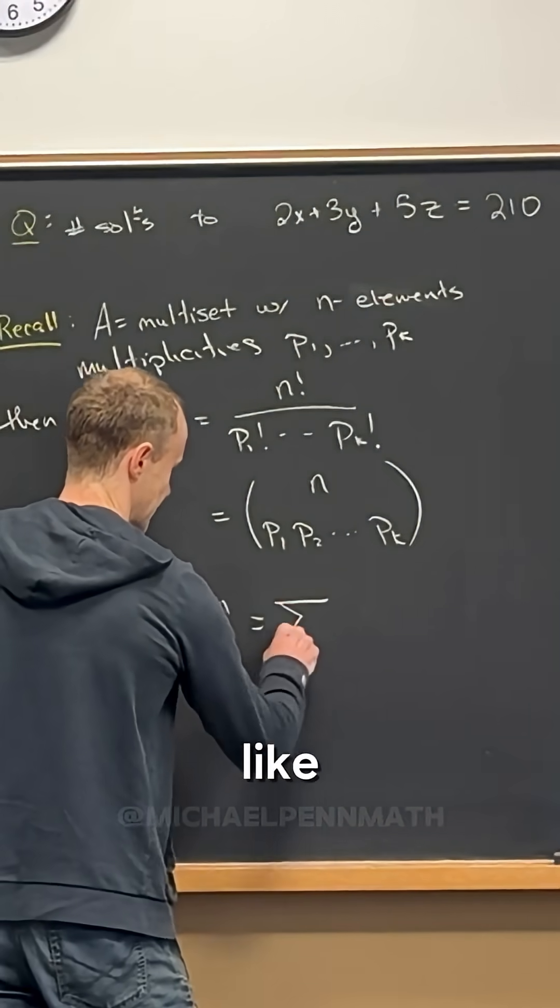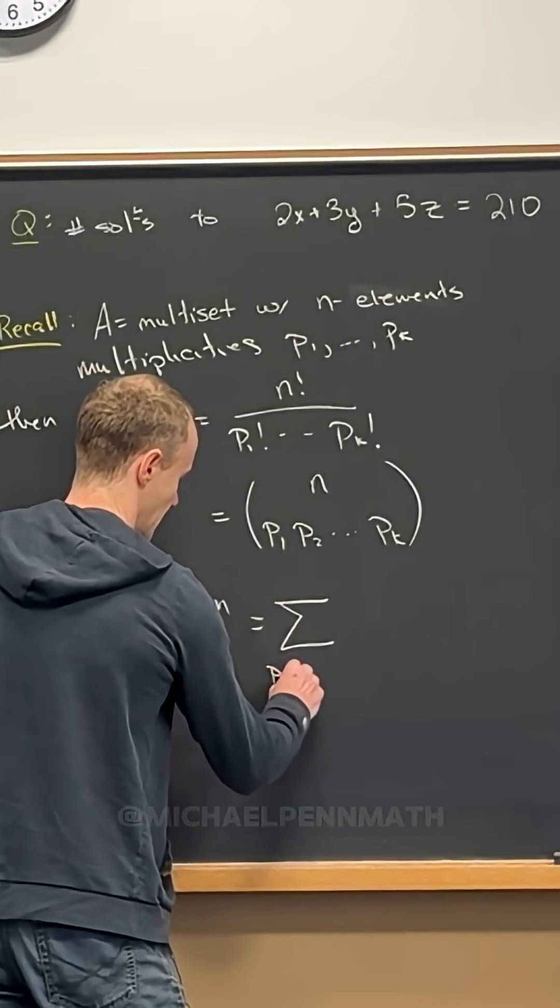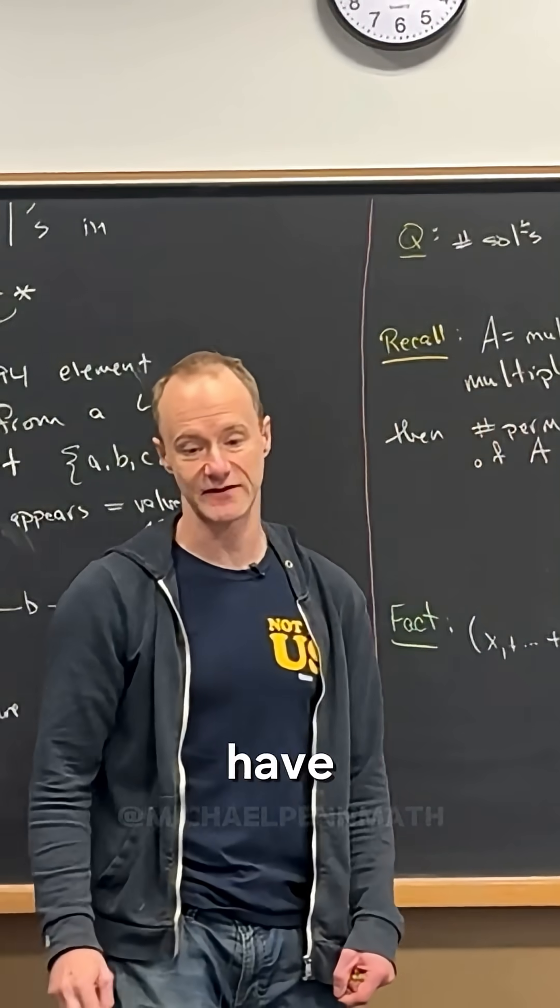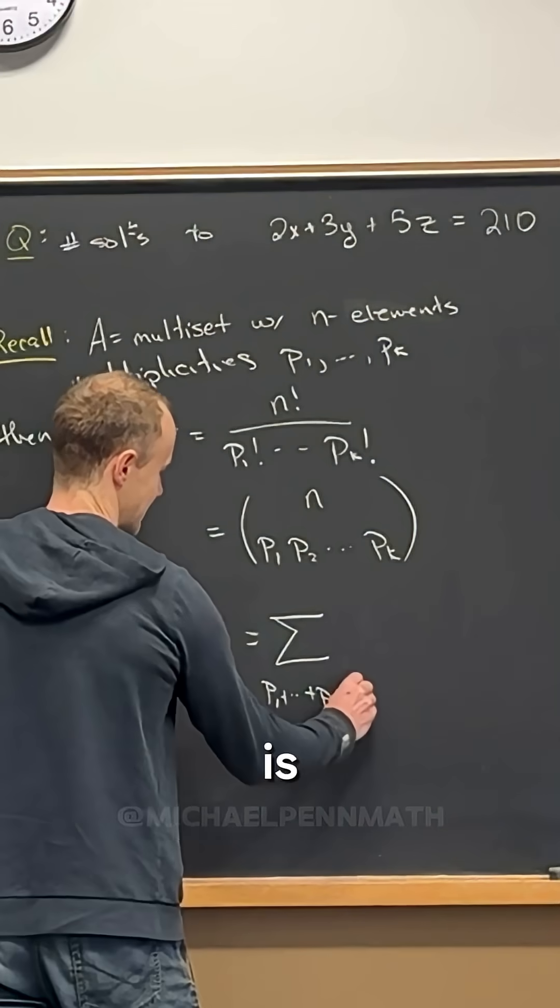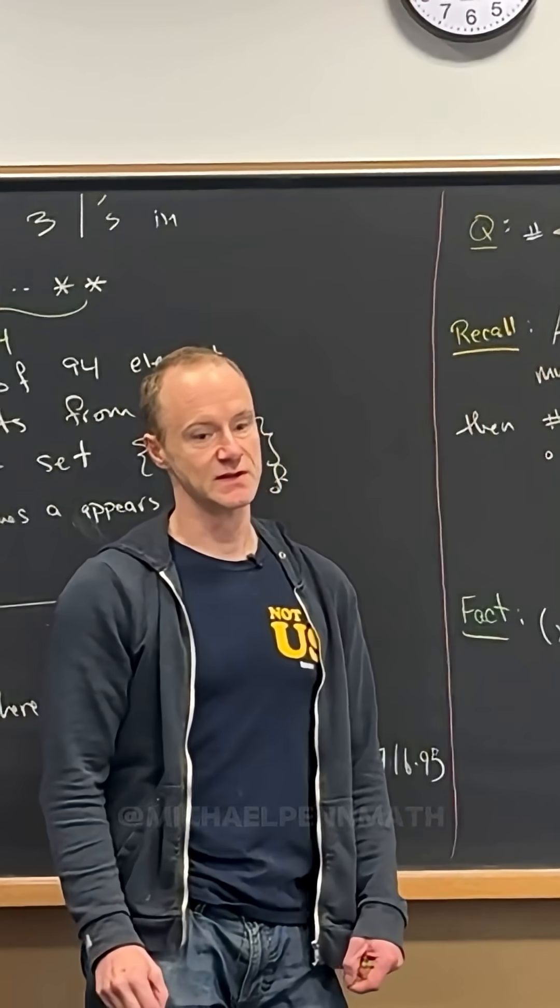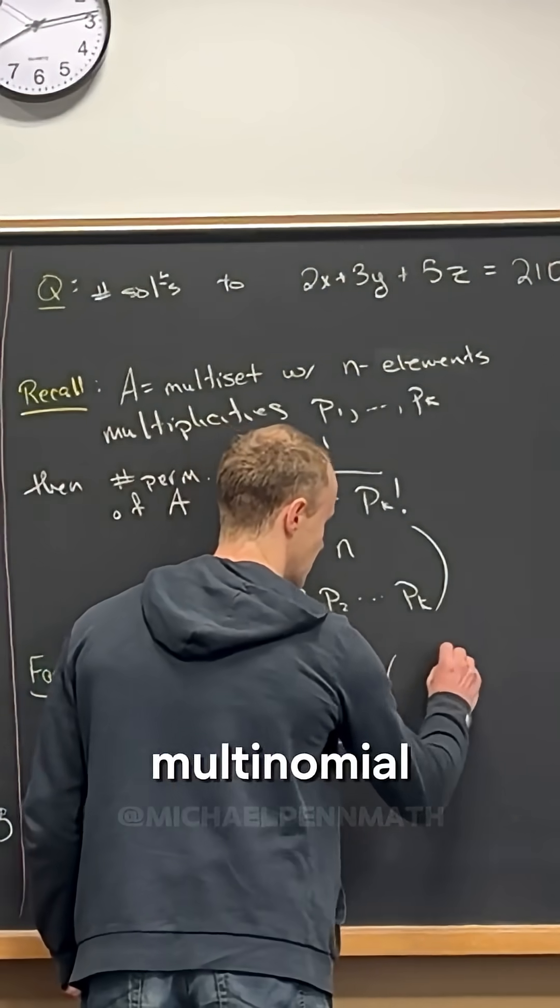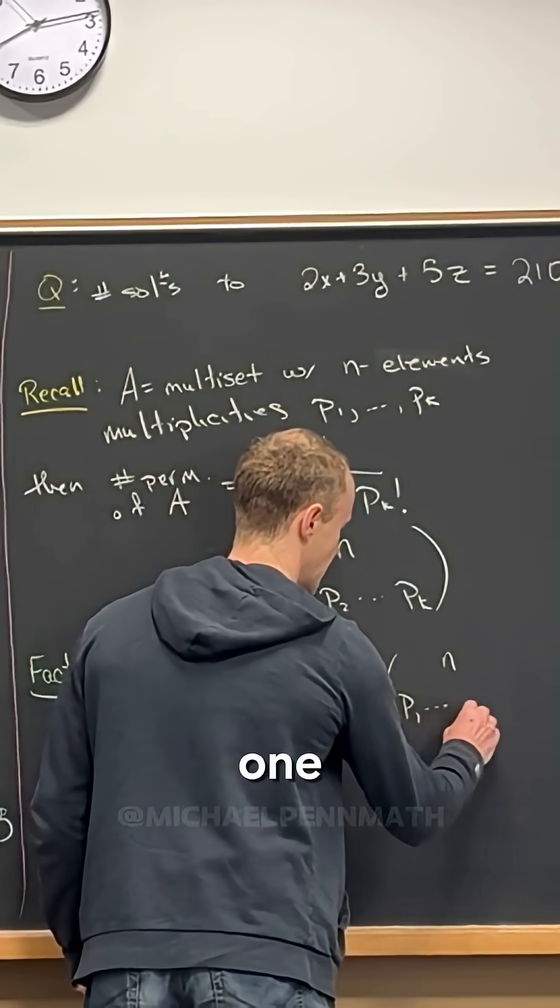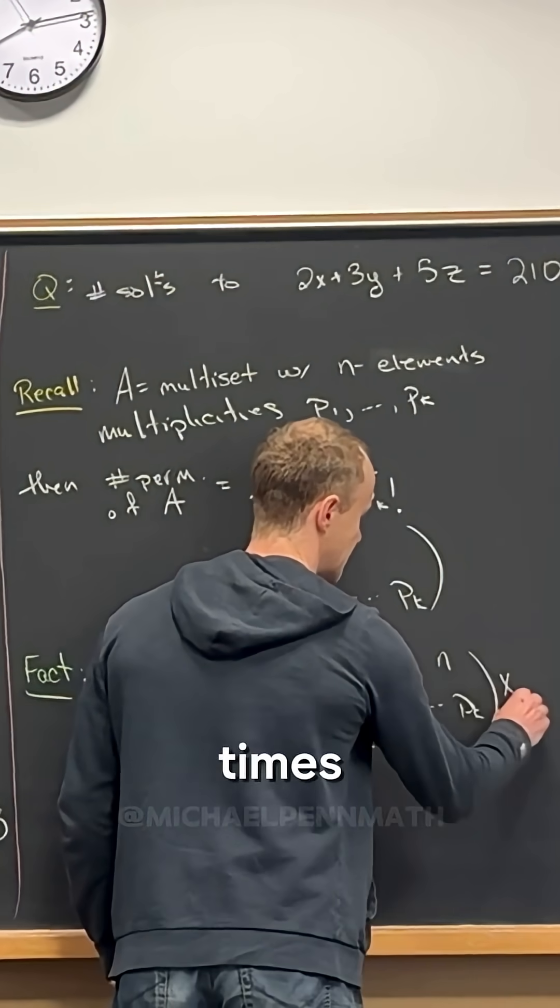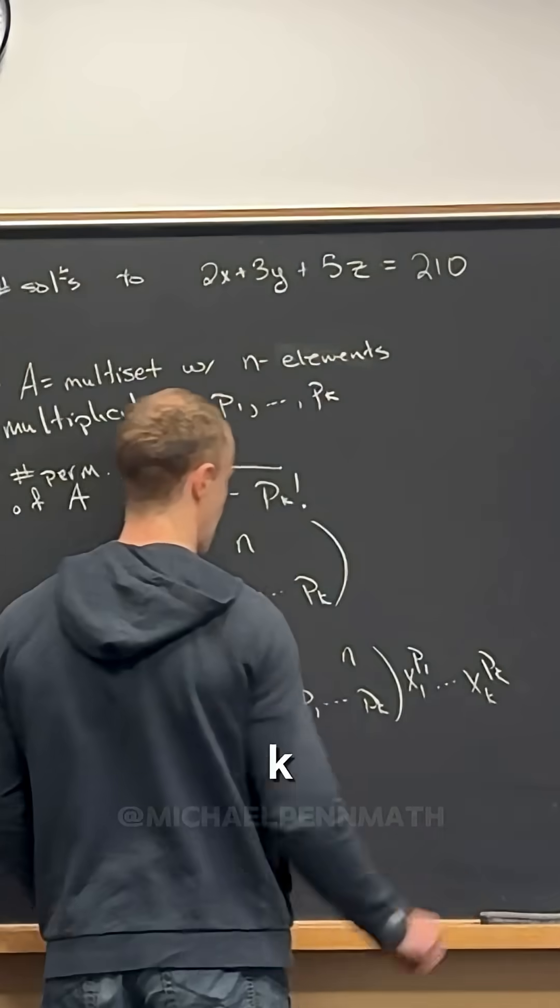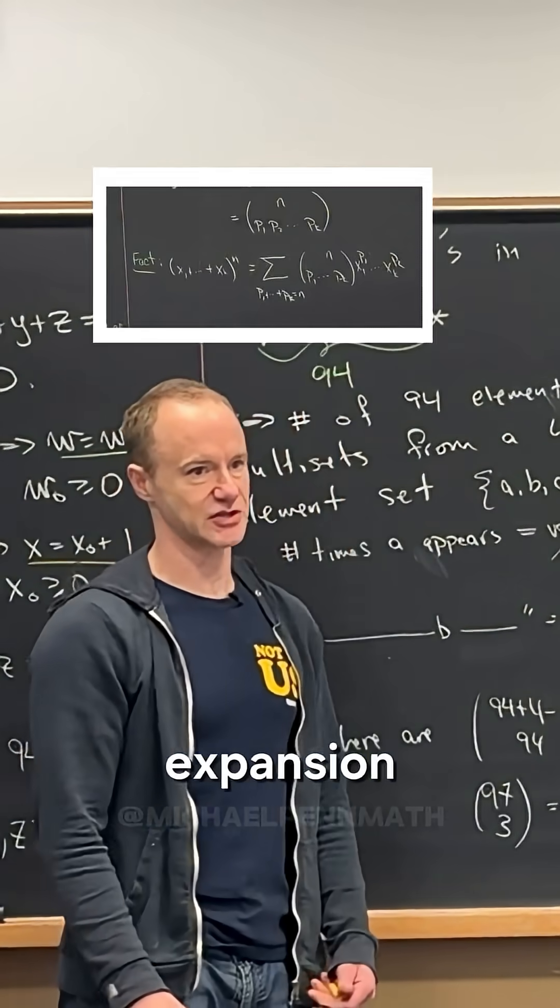It expands like the sum over all the p's, but the p's have to add up to n. So I mean this is kind of some fancy notation here, right. So this is the sum over all the p's that add up to n of this multinomial coefficient p1 up to pk times x1 to the p1 all the way up to xk to the pk. So we've got some sort of expansion like that.